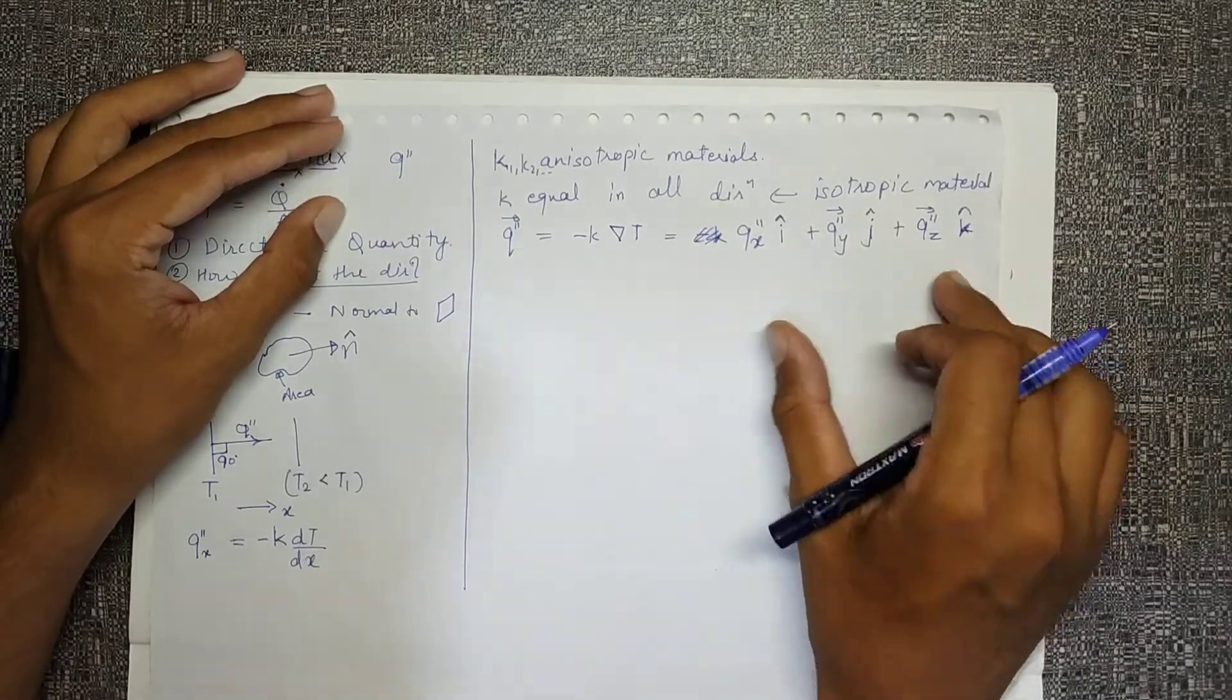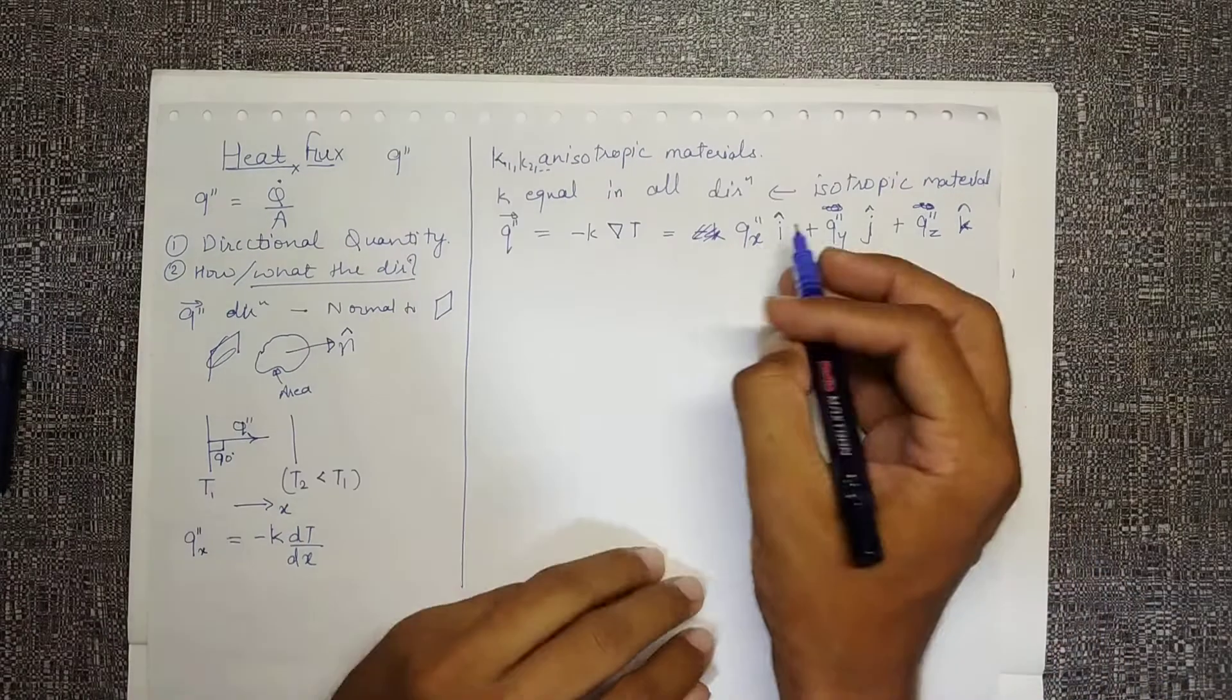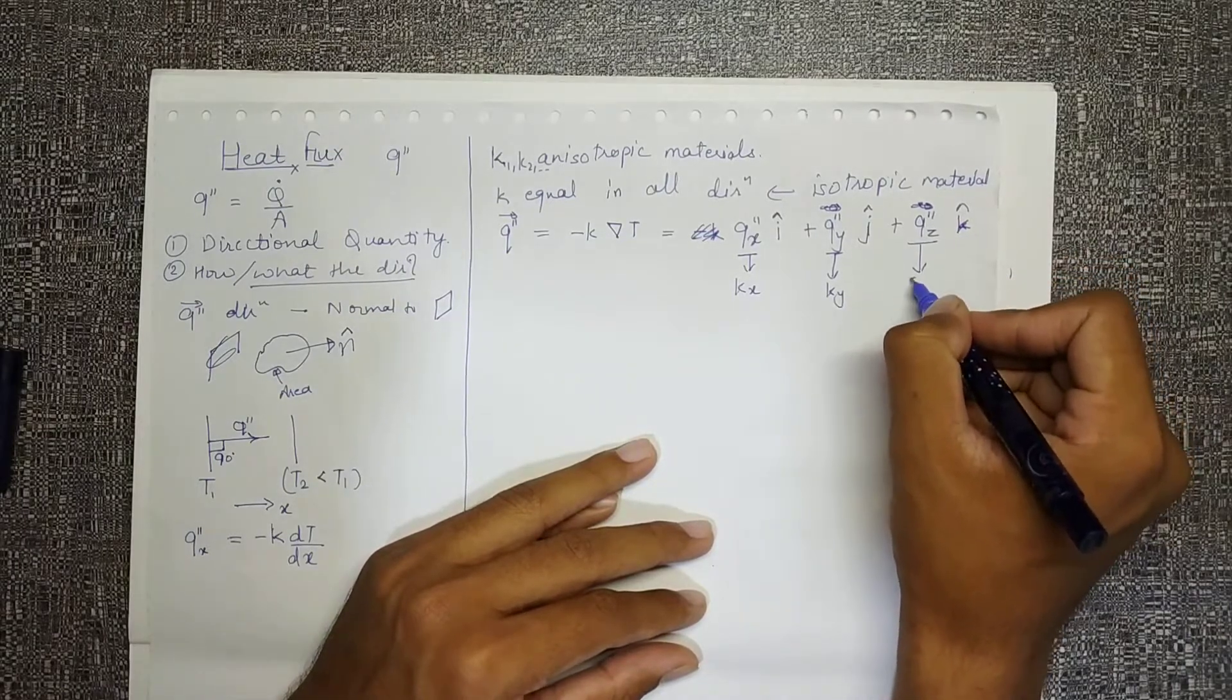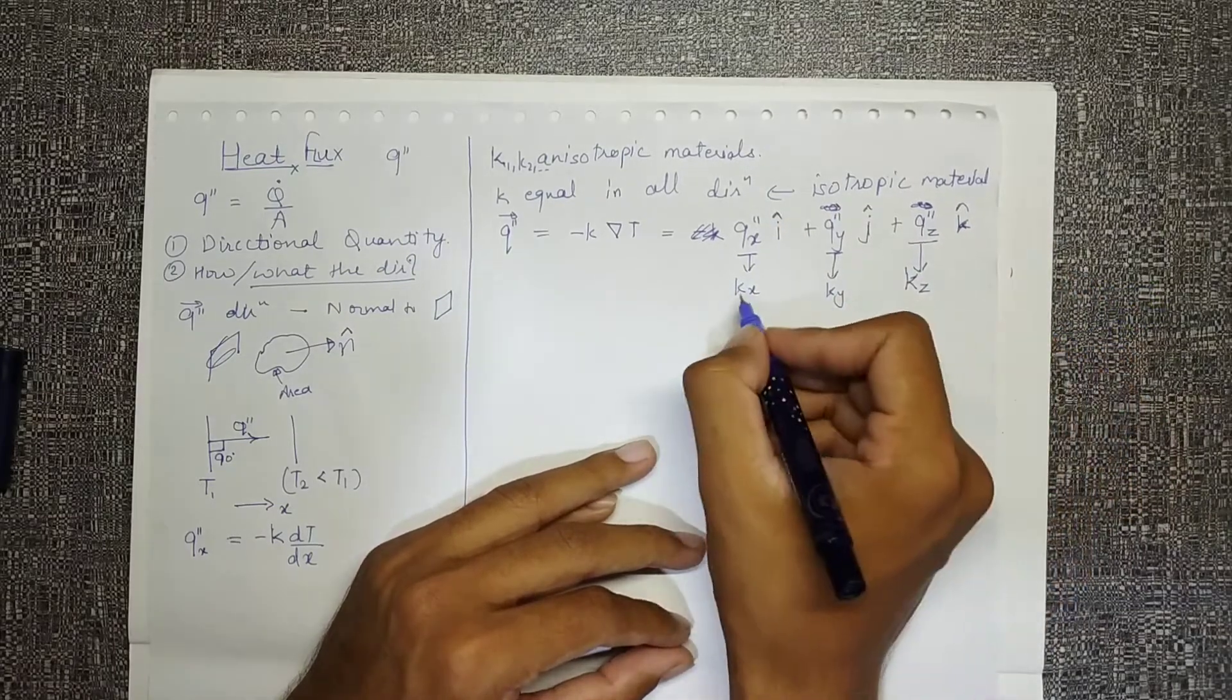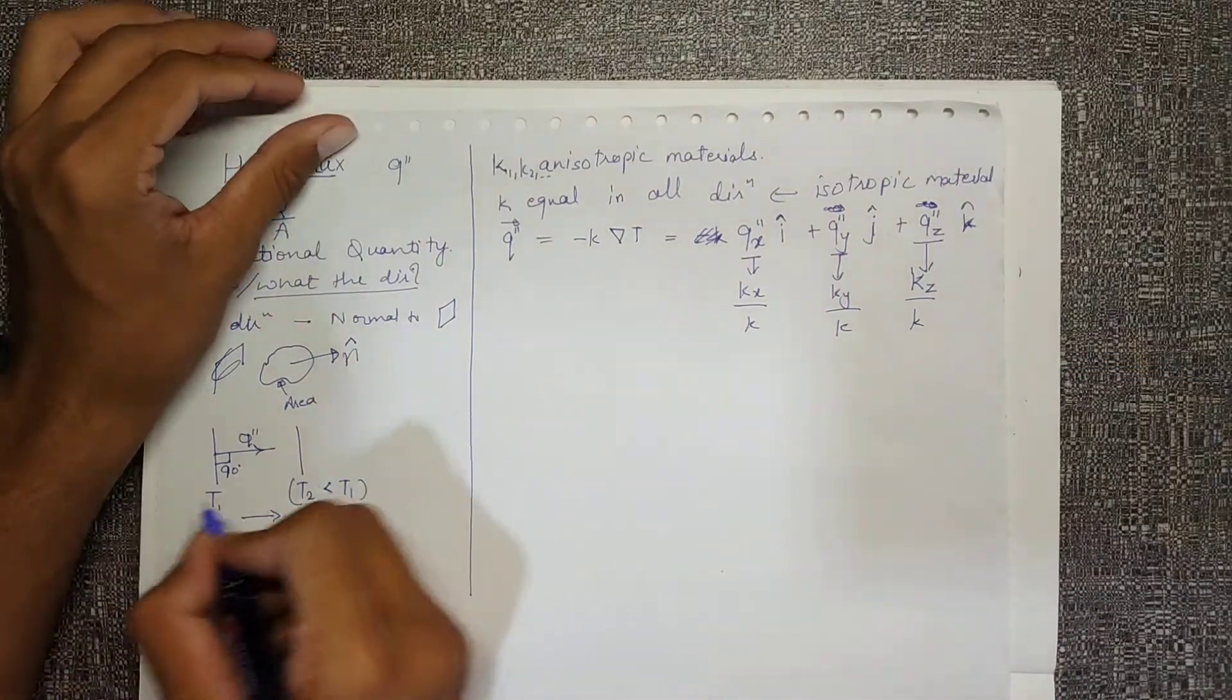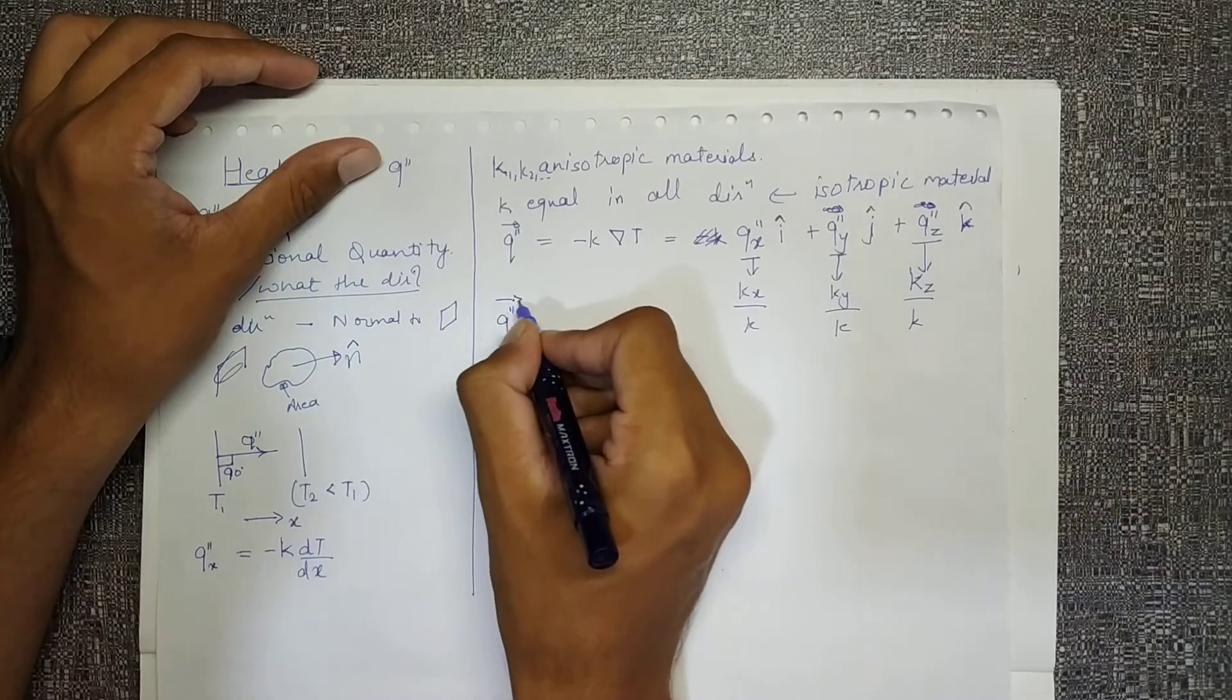Over here I'll use kx, here I'll use ky, over here the formula should include kz, but for an isotropic material all three k values will be equal and hence I can write them as k directly. That is a simplification for us. As I gave earlier, if this is a surface and n cap is our direction, then my heat flux can be generalized like this: minus k dt by dn.